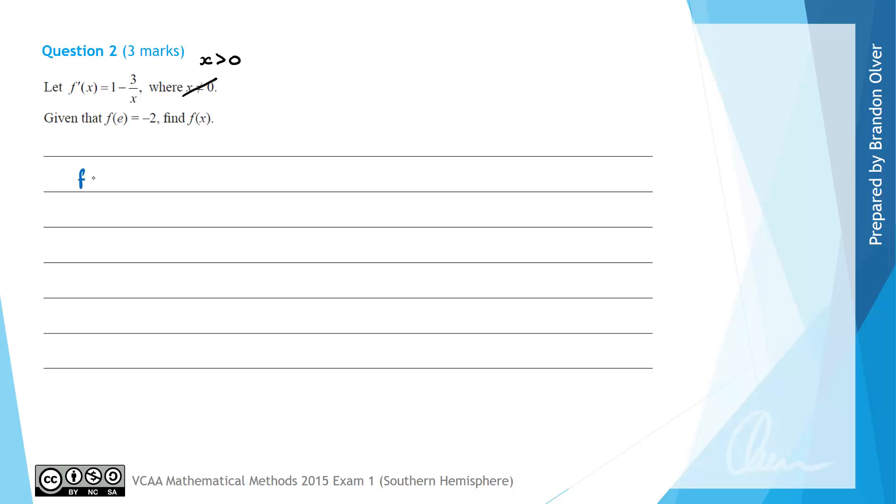We know that the rule of f(x) can be found by integrating the derivative. So we're going to integrate 1 - 3/x with respect to x. That's the same as the integral of 1 with respect to x minus 3 times the integral of 1/x dx.